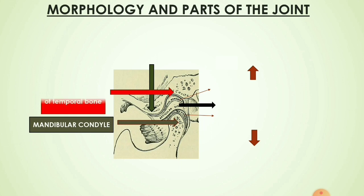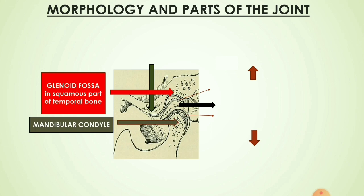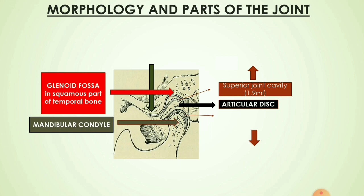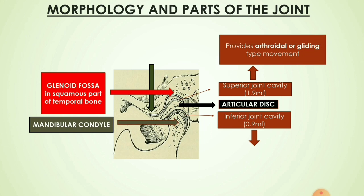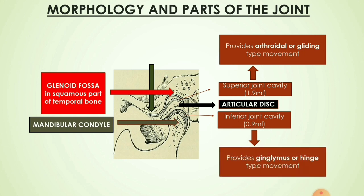The temporomandibular joint consists of the mandibular condyle, the glenoid fossa present in the squamous part of the temporal bone, and the articular disc between the mandibular condyle and the glenoid fossa. The articular disc divides the joint cavity into two parts: the superior joint cavity with a volume of 1.9 ml, and the inferior joint cavity with a volume of 0.9 ml. The superior joint cavity permits arthrodial or gliding movement, whereas the inferior joint cavity provides ginglymoid or hinge type of movement.